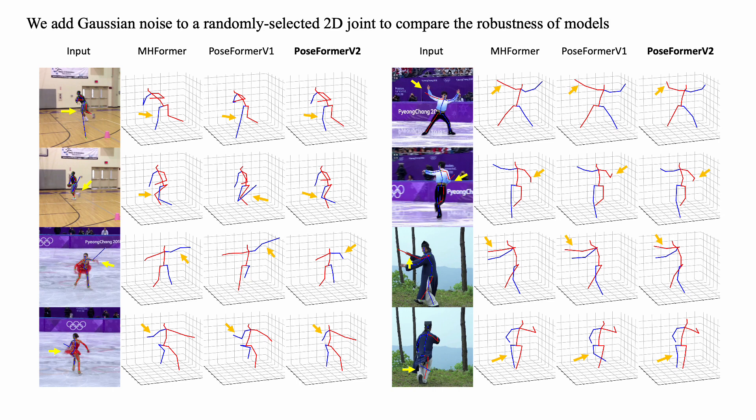We add Gaussian noise to a randomly selected 2D joint to compare the robustness of models, and PoseFormer V2 obtains reliable 3D pose with even highly deviated 2D joint detection.